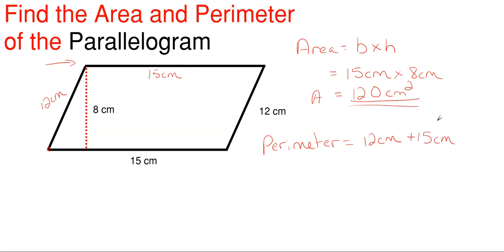Move on to the next side, which is another 12 centimeters, and then lastly, our other bottom here, which is 15 centimeters. So our perimeter total will be 12 plus 15 plus 12 plus 15, and that gives us a total of 54 centimeters for our perimeter.